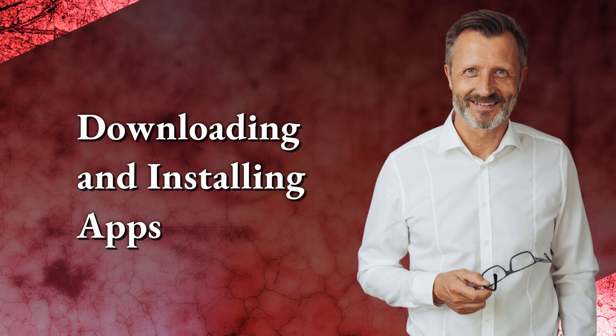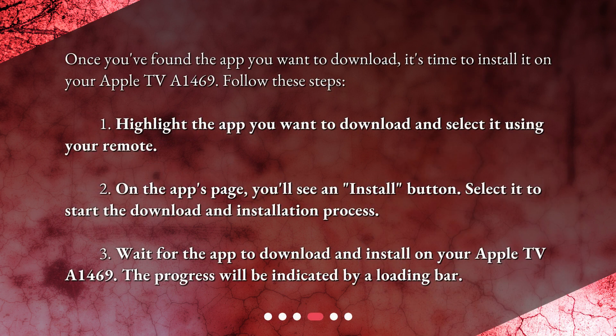Downloading and installing apps. Once you've found the app you want to download, it's time to install it on your Apple TV A1469. Follow these steps. 1. Highlight the app you want to download and select it using your remote. 2. On the app's page, you'll see an install button. Select it to start the download and installation process. 3. Wait for the app to download and install on your Apple TV A1469. The progress will be indicated by a loading bar.